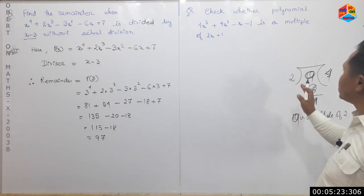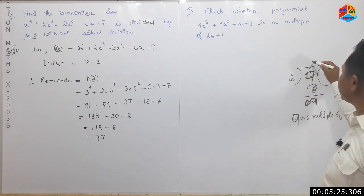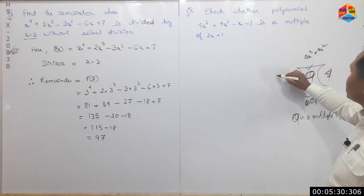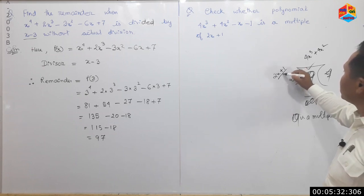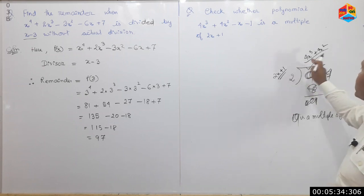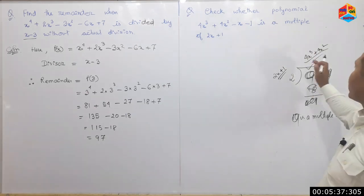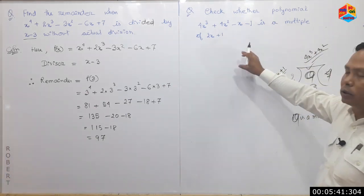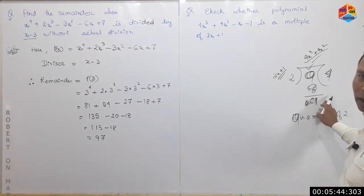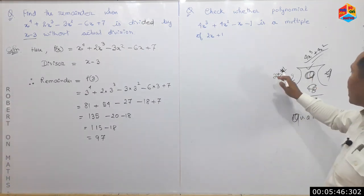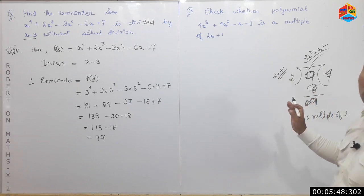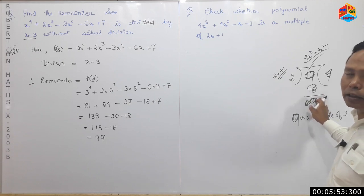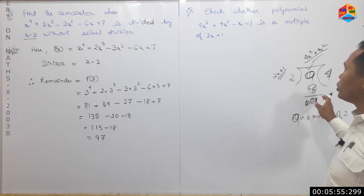The most important thing here is: 4x cubed plus 4x cubed plus 1. Since 4x cubed is a multiple of 1, the remainder is 0. You can see that the remainder is 0. This is the remainder theorem.